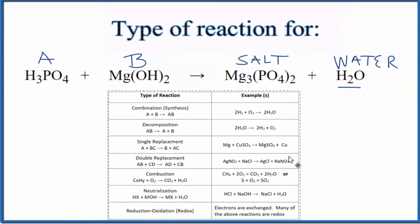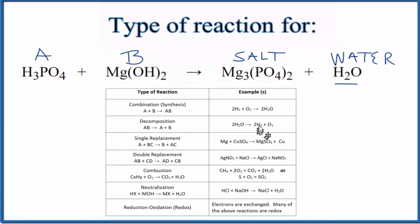We can also look at a table of common types of chemical reactions. If we look down the table, we know we have a neutralization reaction, but this is also considered a double replacement reaction. That's because the magnesium and the hydrogen switch places.